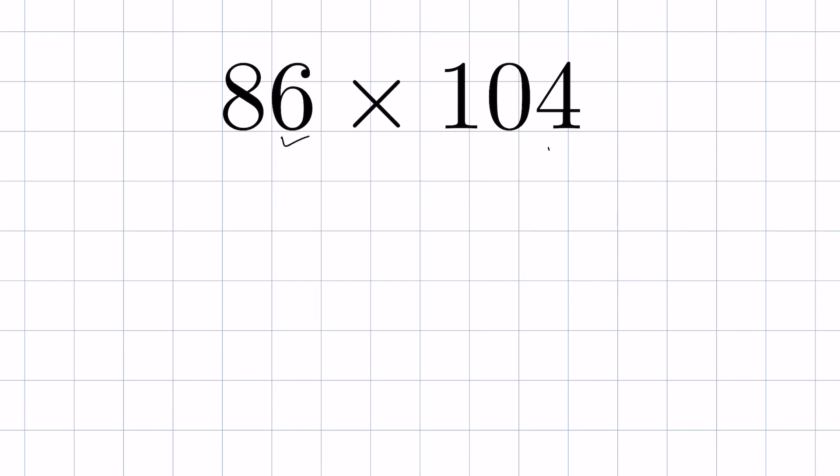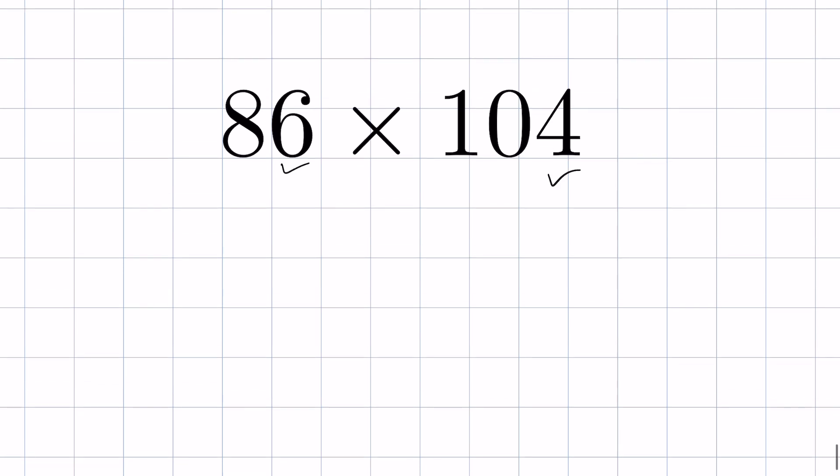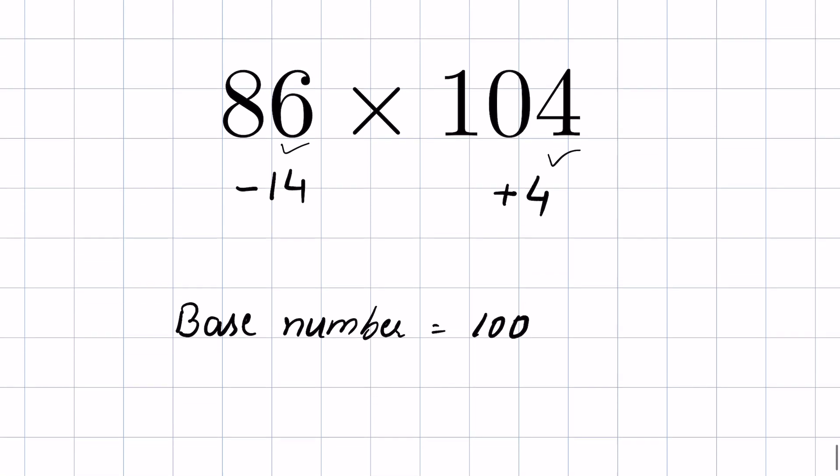So 100 is 14 more than 86, or you can write 86 is 14 less than 100. We take this number as 100. Now 86 is less than 100 by 14, and 104 is 4 more than 100. So we write positive 4 and here negative 14.